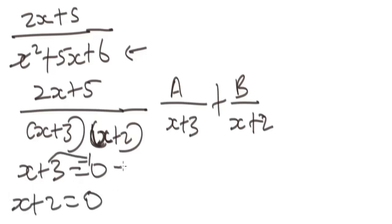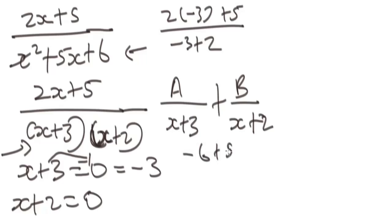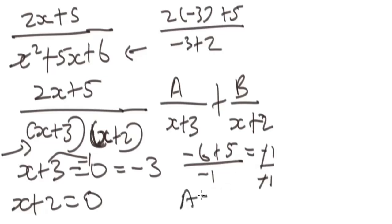Set x plus three equal to zero, giving x equals negative three. Substitute negative three into the numerator expression but not into the x plus three factor. We get two times negative three plus five over negative three plus two, which is negative six plus five over negative one, giving negative one over negative one. So A equals one.